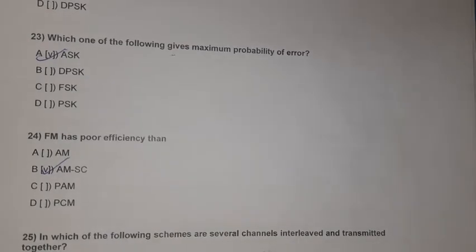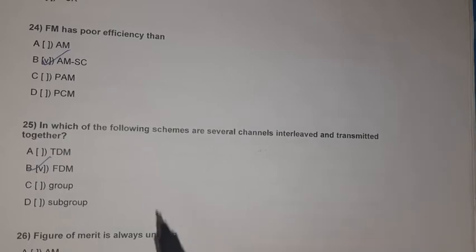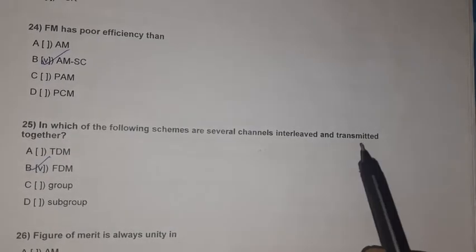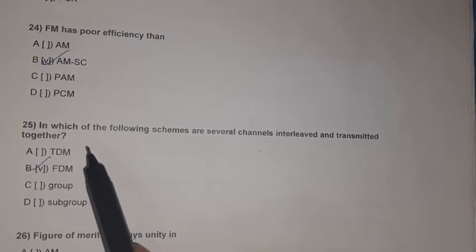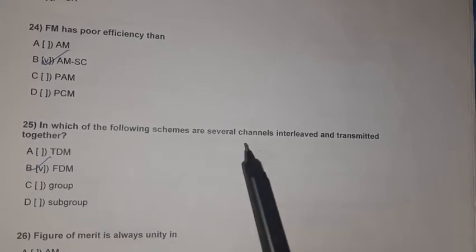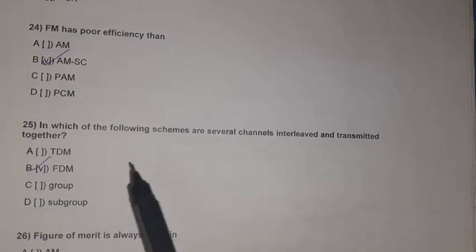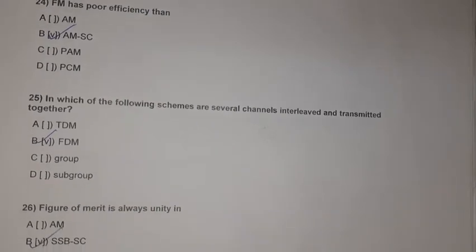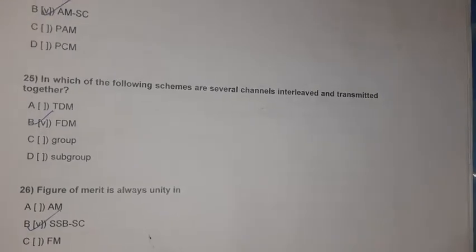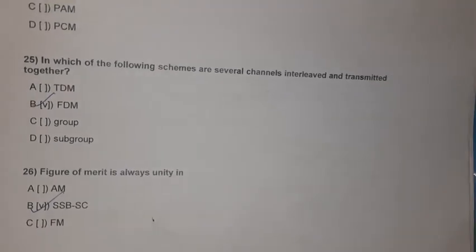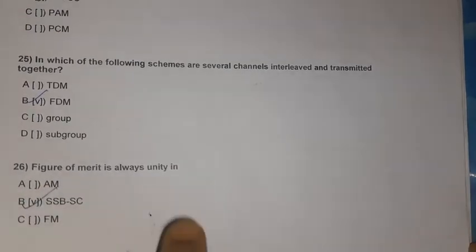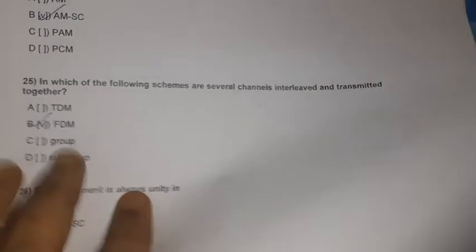Question 23: FM has poor efficiency compared to AM suppressed carrier. Question 24: In FDM (Frequency Division Multiplexing), several channels are interleaved and transmitted together. Question 25: The figure of merit is always unity in SSB suppressed carrier (Single Sideband Suppressed Carrier).